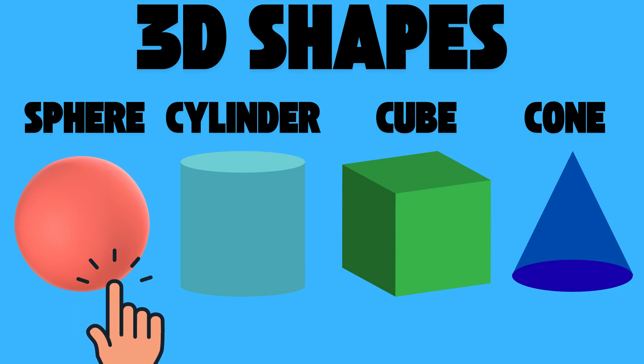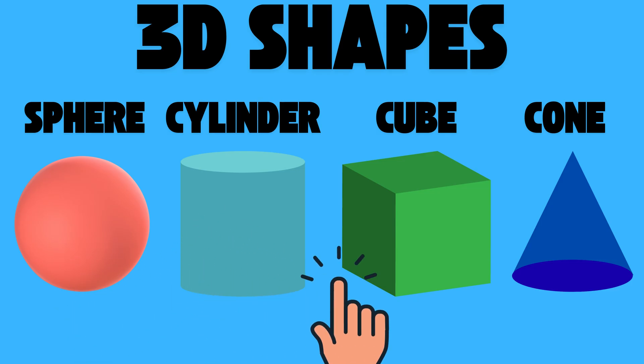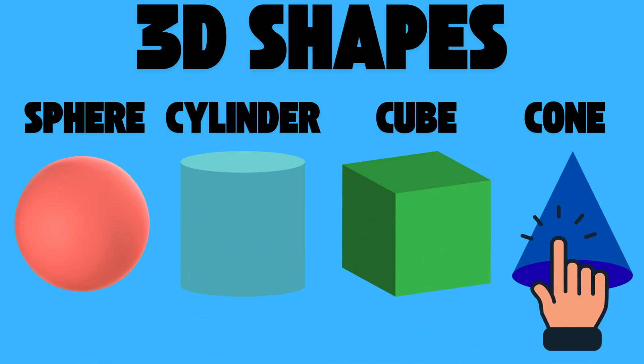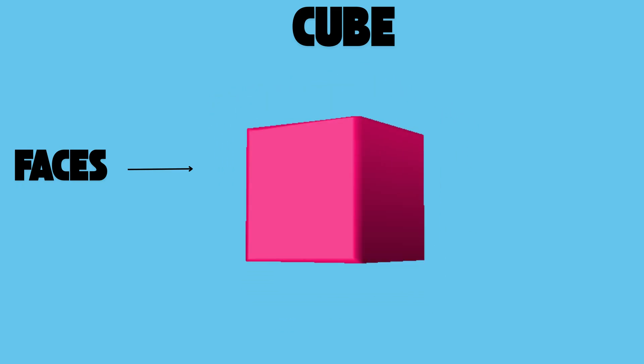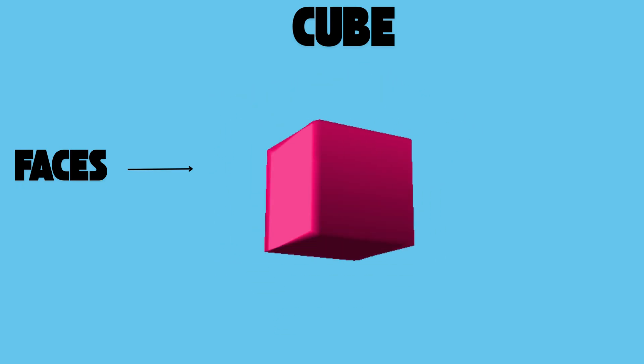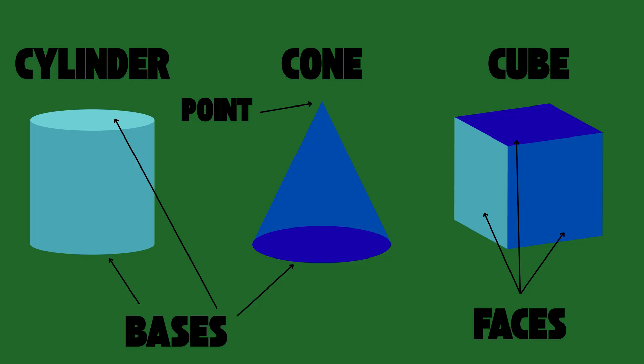Sphere, cylinder, cube or cone. Learning 3D shapes, we're in the zone. A 3D shape will have faces. Some may have points or bases.